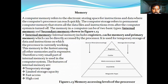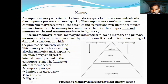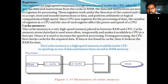So this is internal memory and its features. Coming back to registers — internal memory is related to registers, cache memory, and primary memory. Registers are high-speed temporary storage areas located inside the CPU. After the CPU gets data and instructions from the cache or RAM, the data and instructions are moved to the register for processing. These registers work under the direction of the Control Unit (CU) to accept, store, and transfer data.